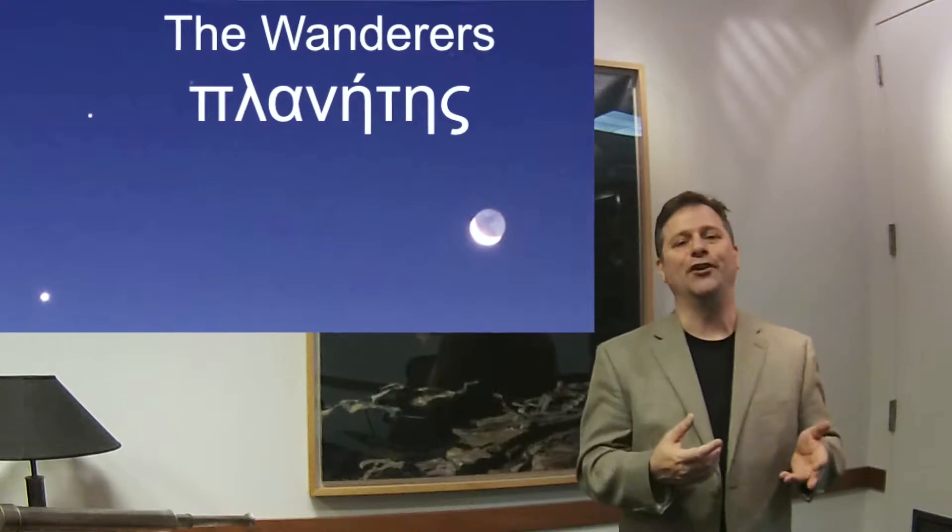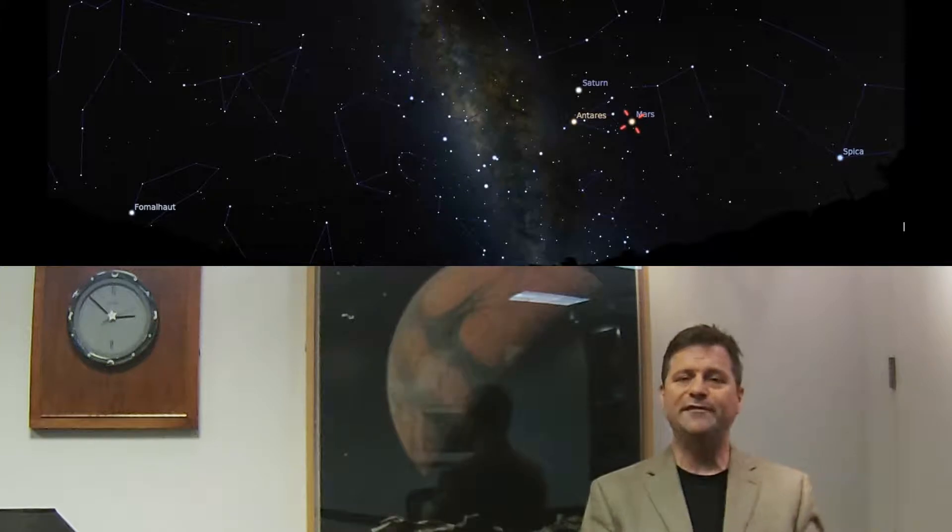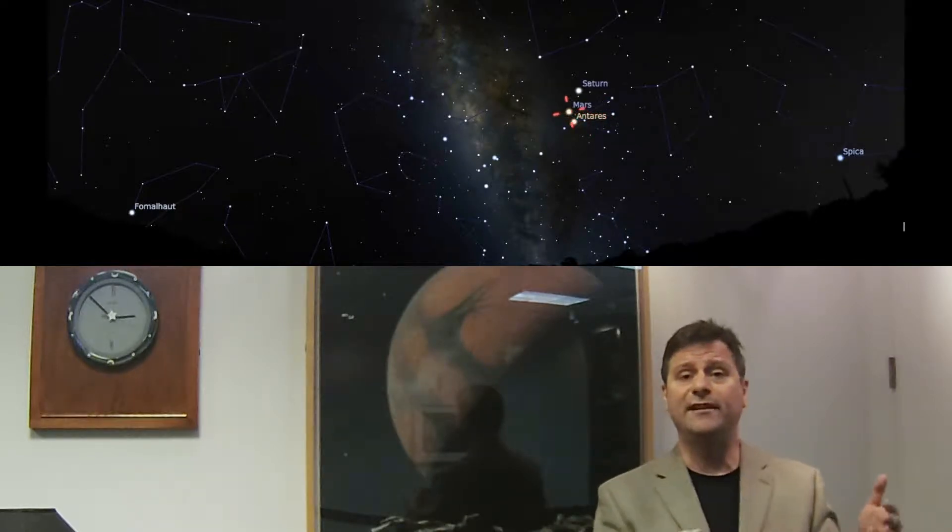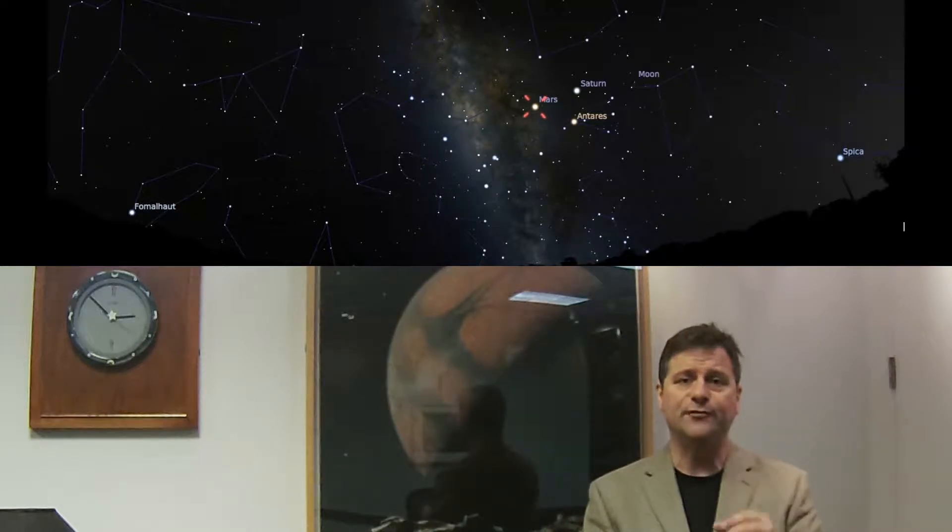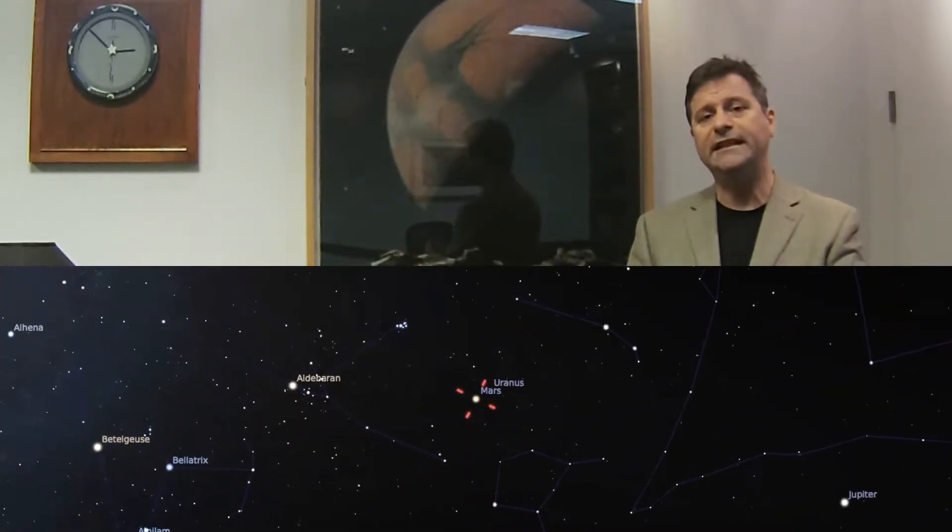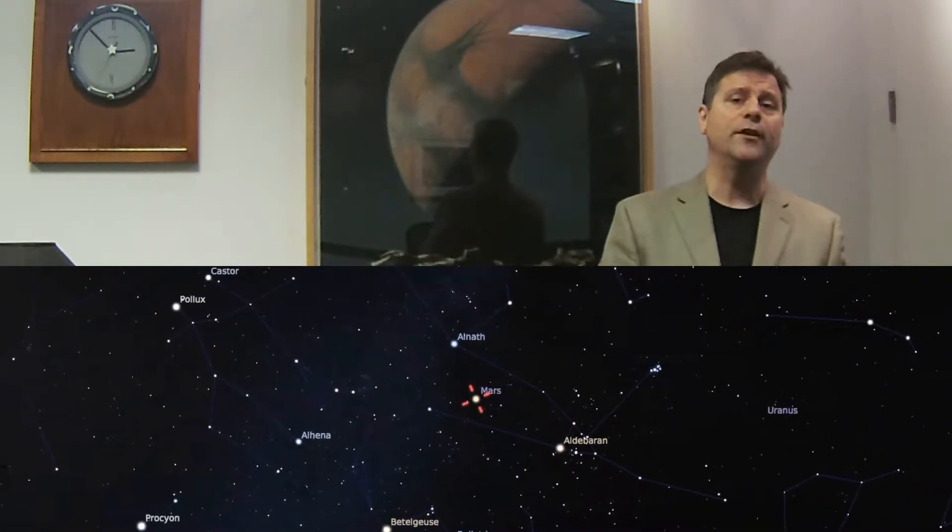So what are the wandering stars? The wandering stars also appear to rise in the east and set in the west, just like all the other stars. However, they steadily drift eastward every day. So over many days, if you watch them day after day, you will see them slowly drifting eastward. And occasionally they will drift westward on what we would call retrograde motion.